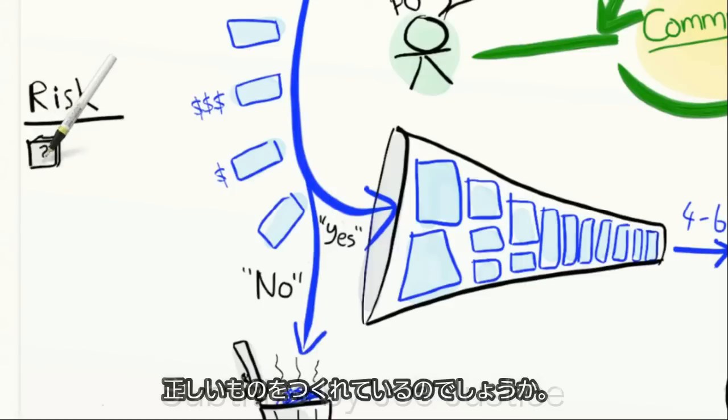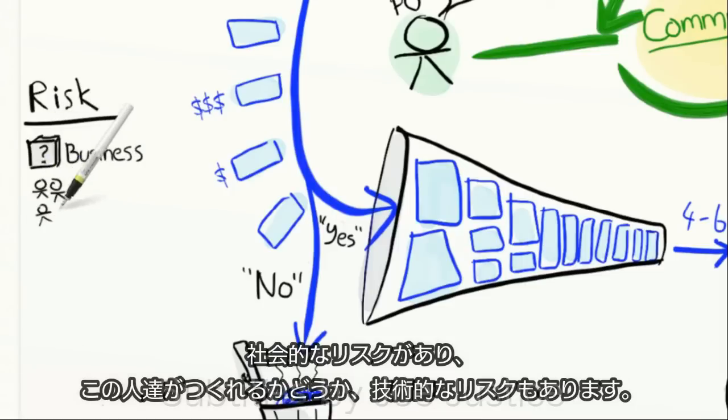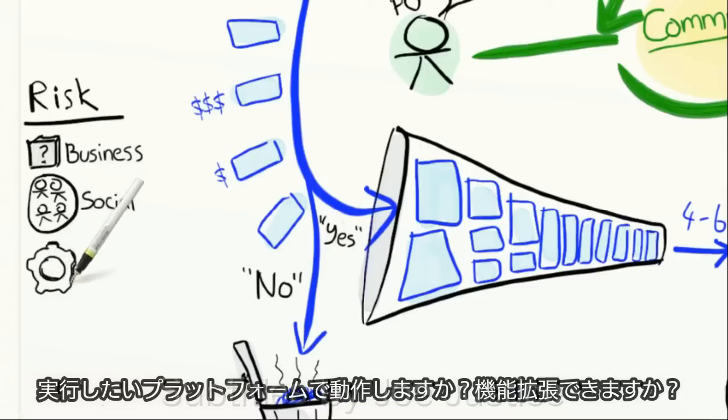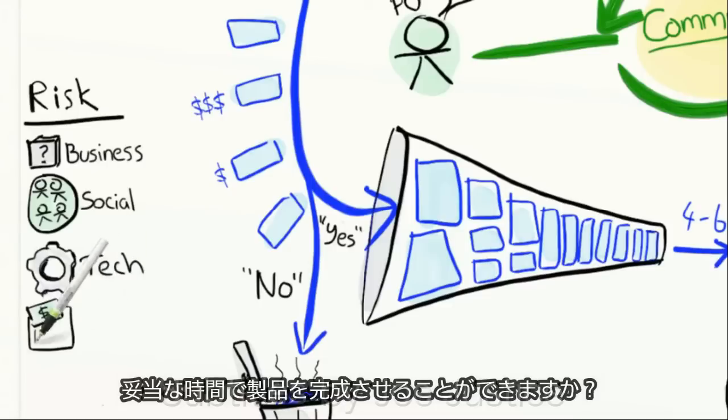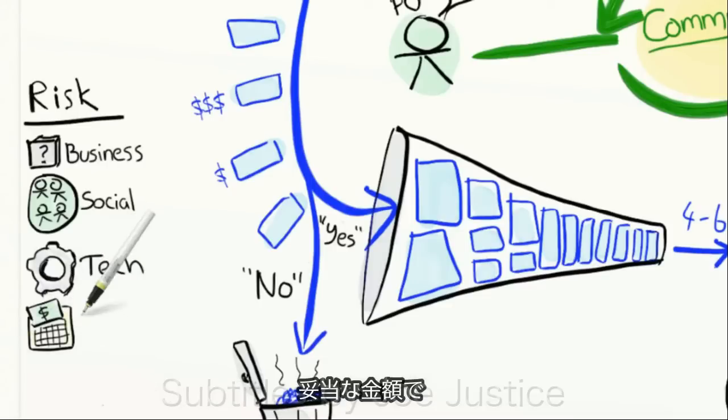There's business risk. Are we building the right thing? There's social risk. Can these people build it? And there's technical risk. Will it work on the platform that we want to run it on? Will it scale? And there's cost and schedule risk. Can we finish the product in a reasonable amount of time for a reasonable amount of money?